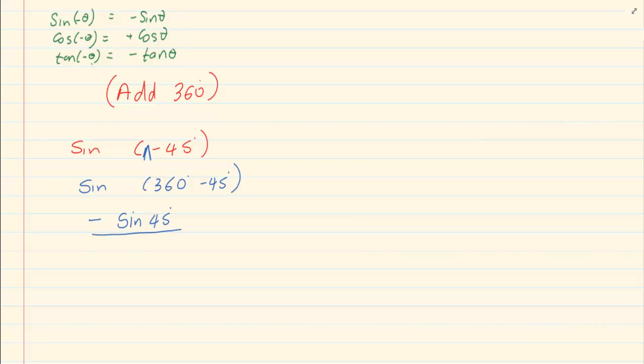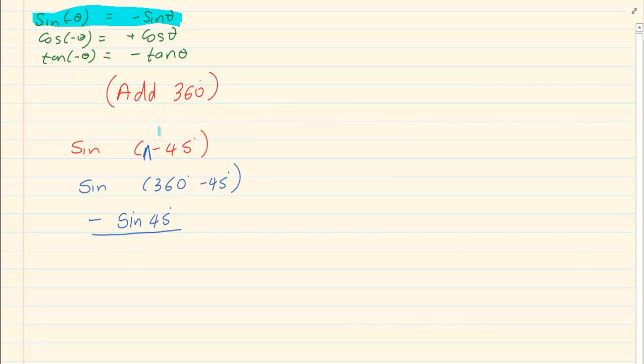Now yes, it was easier to simply say, using these rules on top, that I could simply say, okay, so if it's a negative angle, as it is here, it simply becomes negative sin theta. I could have simply went on top and said, okay, sin negative theta is negative sin 45 without doing the work of adding a 360.